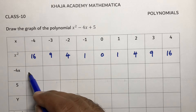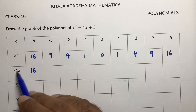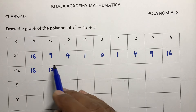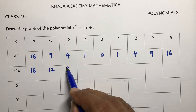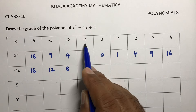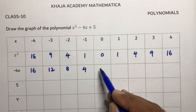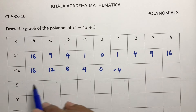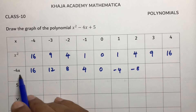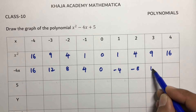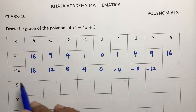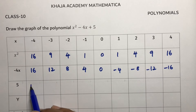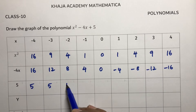Now for -4x: -4 × (-4) = +16, -4 × (-3) = +12, -4 × (-2) = +8, -4 × (-1) = +4, -4 × 0 = 0, -4 × 1 = -4, -4 × 2 = -8, -4 × 3 = -12, -4 × 4 = -16. The constant term is 5, so all values in that column will be 5.